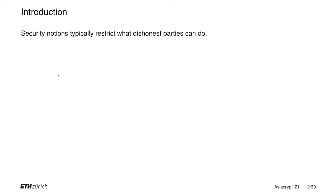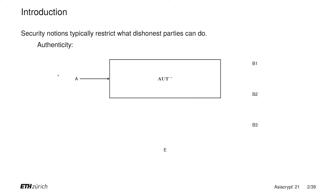Security notions normally capture what dishonest parties cannot achieve. For example, let's consider an ideal resource capturing authenticity. We consider a setting with five parties: Alice, Bob1, Bob2, Bob3, and Eve.